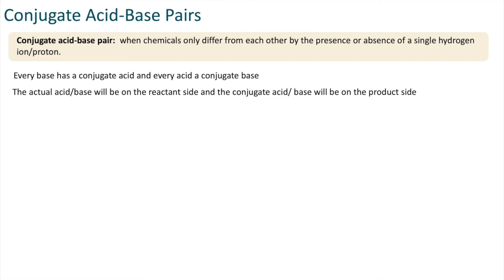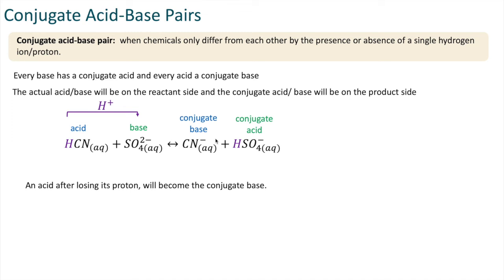In this reaction here we have hydrogen cyanide reacting with sulfate to produce cyanide and hydrogen sulfate. The acid is this species here and the base is this species here. The conjugate base and conjugate acid are found on the product side of the reaction. An acid will lose its proton and it will become the conjugate base, and the conjugate base can accept a proton to return to its acidic form.